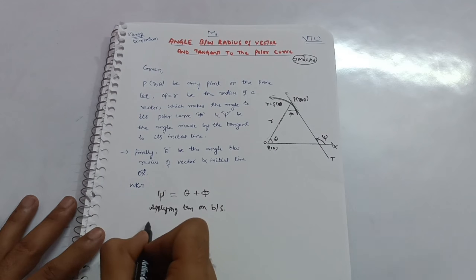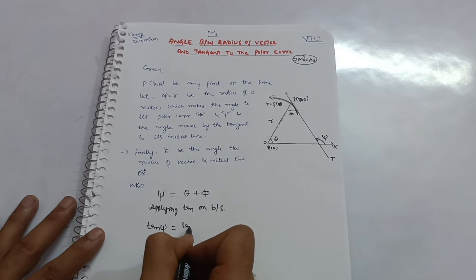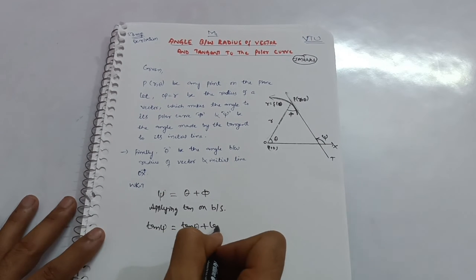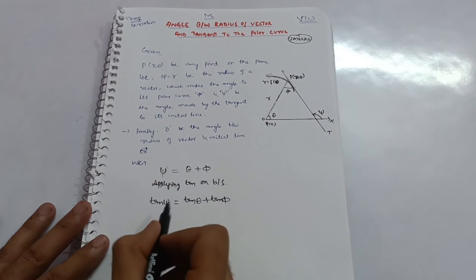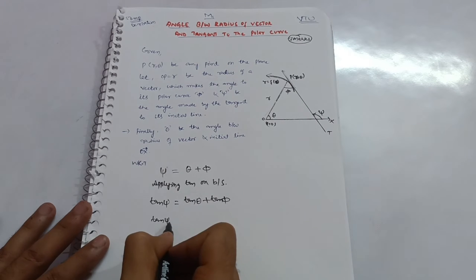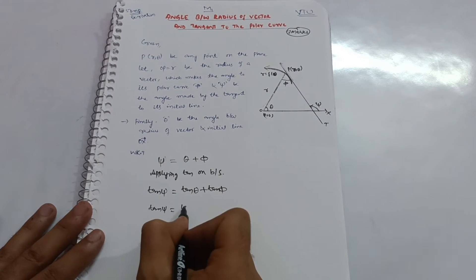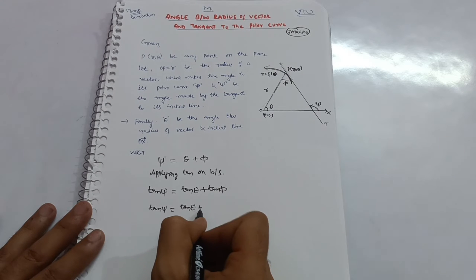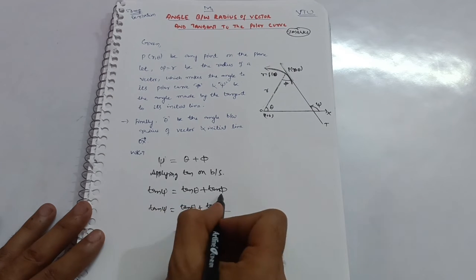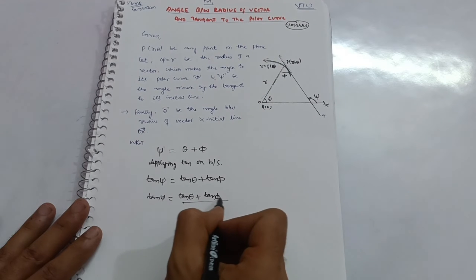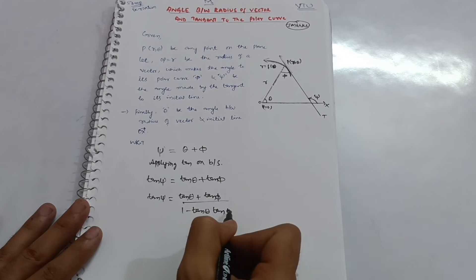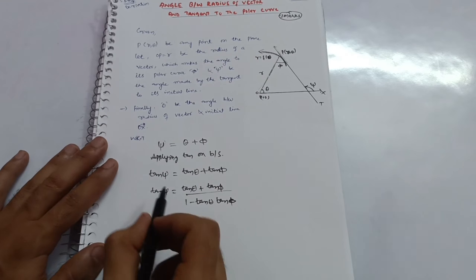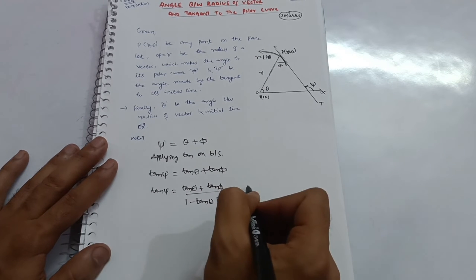Applying tan to both sides gives: tan ψ = tan(θ + φ). Using the formula tan(A + B) = (tan A + tan B) / (1 − tan A · tan B), we get tan ψ = (tan θ + tan φ) / (1 − tan θ · tan φ). This is the first equation.